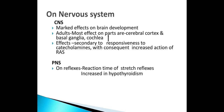On the CNS, there is a marked effect on brain development. Most effects are on the cerebral cortex, basal ganglia, and cochlea. The increased effects are akin to responsiveness to catecholamines with consequent increase in reticular activating system. Thyroid hormones help in synaptic development and myelination. They maintain normal reaction time in the peripheral nervous system. Excess thyroxine causes stimulation of CNS resulting in restlessness.